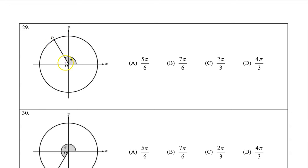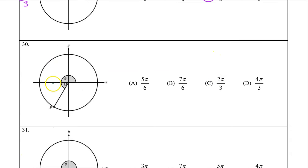On number 29, the terminal ray is not right in the middle. The reference angle is bigger than pi over 4 — it must be pi over 3. That means that theta is some multiple of pi over 3. If we think of pi as 3pi over 3, we realize that theta is one multiple before 3pi over 3, so it must be 2pi over 3. And the answer is C. On number 30, the reference angle again appears to be pi over 3 — it looks like one third of the semicircle. Therefore angle theta, which goes all the way around, must be some multiple of pi over 3. If we think of pi as 3pi over 3, we realize that theta is one multiple beyond 3pi over 3, so it must be 4pi over 3. And the answer is D.